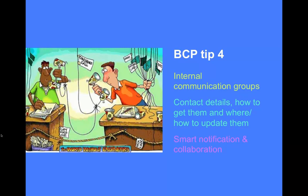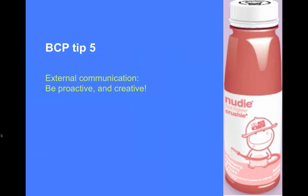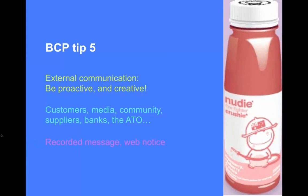Tip 5: External communication — be proactive and creative. The Nudie Juice case showed that media coverage after a fire, if responded to extremely quickly and well, can be an extreme benefit. Communicate to everyone: customers, media, community, suppliers, banks, the ATO, even your landlord. Tell them upfront there's a problem and they should expect delays with reporting or payments. Being proactive means they won't knock on your door. Web notices and recorded messages help streamline that communication.